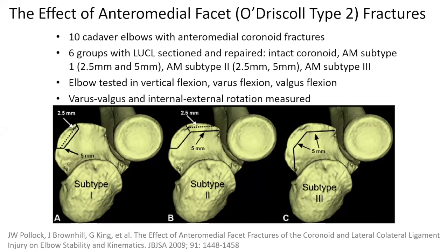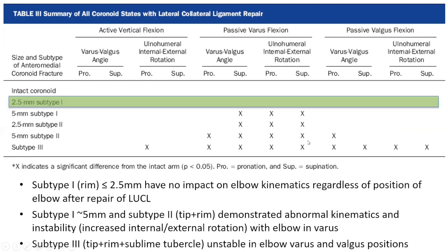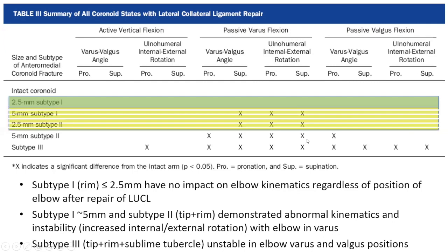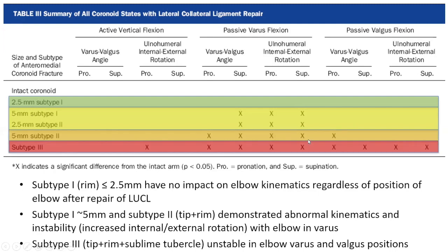The study showed that small isolated tip fractures demonstrated kinematic stability, but subtype 3 fractures with extension into the sublime tubercle not only had more profound abnormality in kinematics but also had significant varus instability.